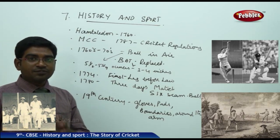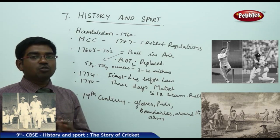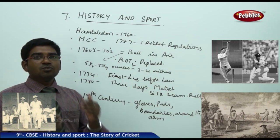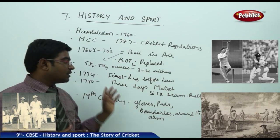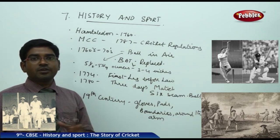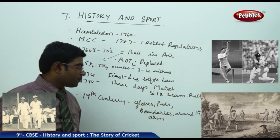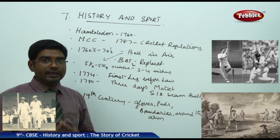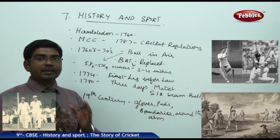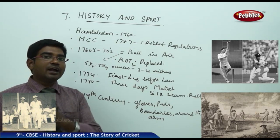In 1774, for the first time the leg before wicket law was introduced — you cannot place your leg before the wickets, now known as LBW. In 1780, we saw the first match played for 3 days, and the 6-seam ball was introduced. It was only in the 19th century that most safety equipment was added to the game — gloves, pads, boundaries were fixed, and overarm bowling became legal. We can observe cricket as a pre-industrial sport that underwent changes during and after the Industrial Revolution in the 18th and 19th centuries.